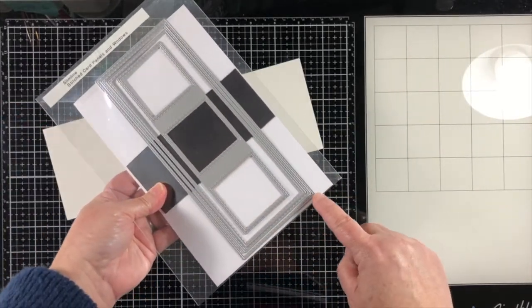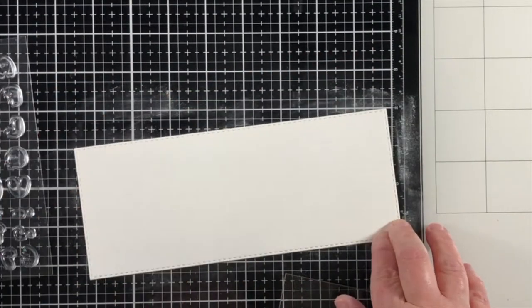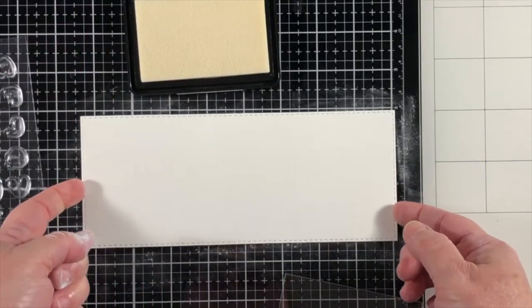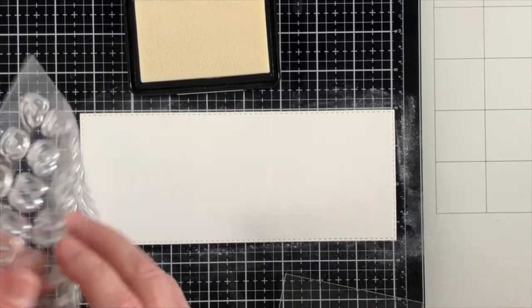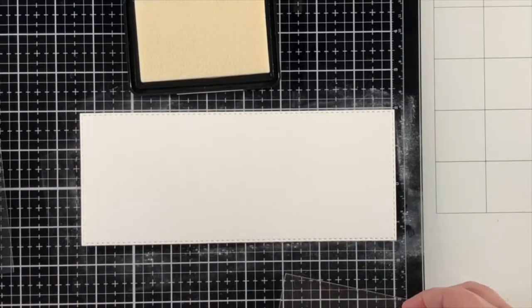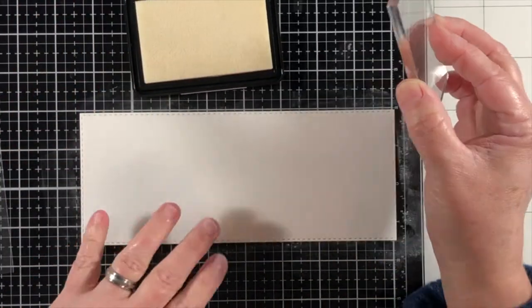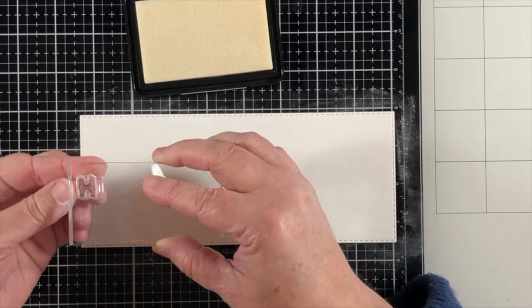I'm going to start off by making sure that I have a panel that's already die cut with a slimline rectangle panel, and I'll put the link to what I used in the video description below. Because I'm going to put different stamped images all over the front of this panel, I am coating the whole thing with some embossing buddy bag.